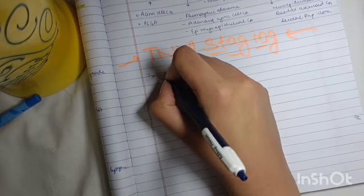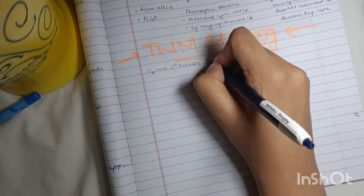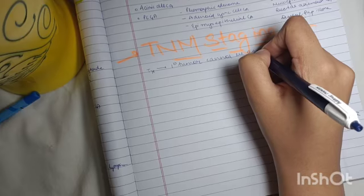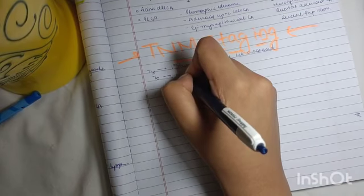If it is TX, it means that the primary tumor cannot be assessed. If it is T0, that means there is no tumor.